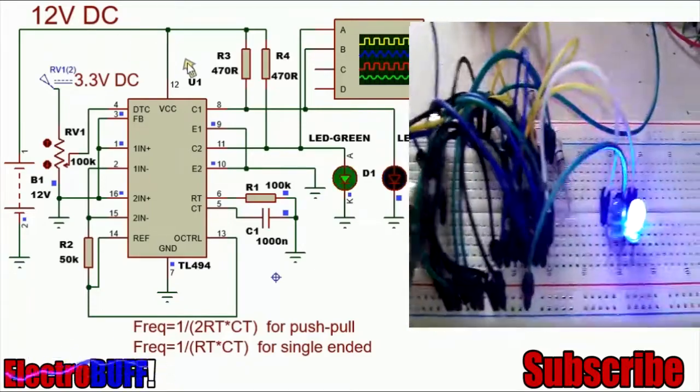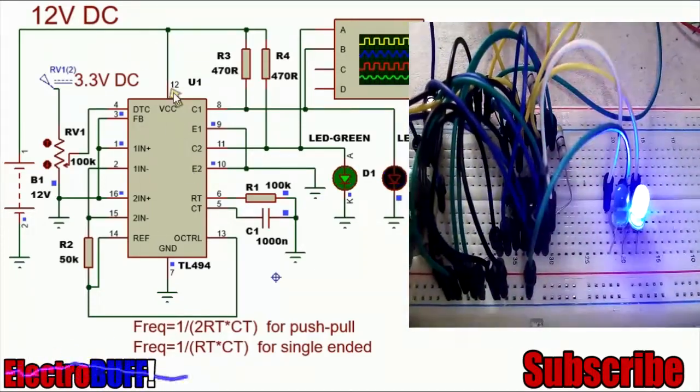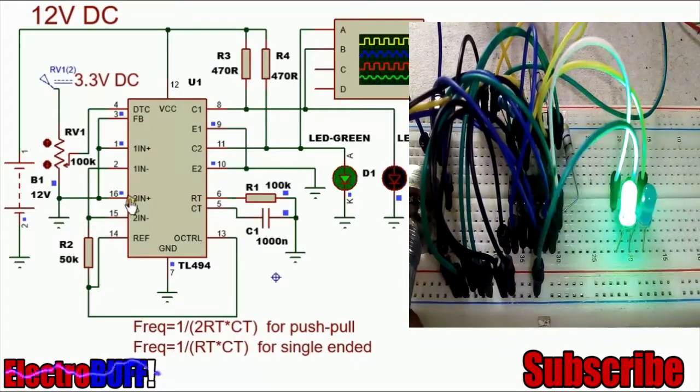The entire pin connections are shown. It comes in a 16-pin package. Pin 12 is the VCC, pin 7 is the ground. It has two internal error amplifiers.